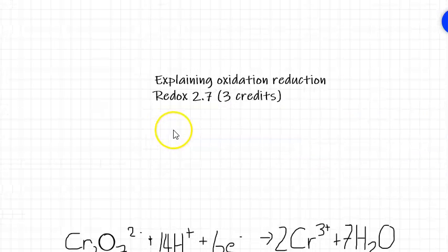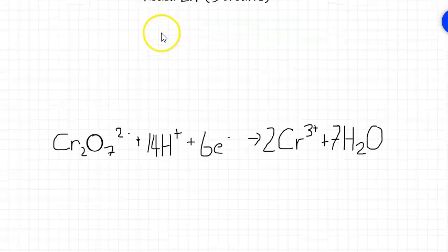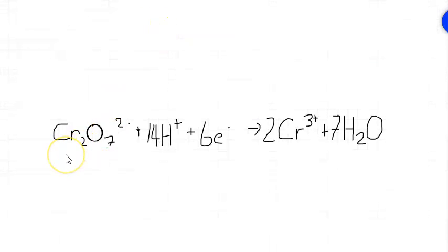To do this we need to start off with the balanced half equation. This is the most complex one that you'll come across. We've got the reduction of dichromate to a chromium ion. You can see we've got two chromium atoms within the dichromate ion become the two chromium ions. Everything else has been balanced according to balancing half equation rules.